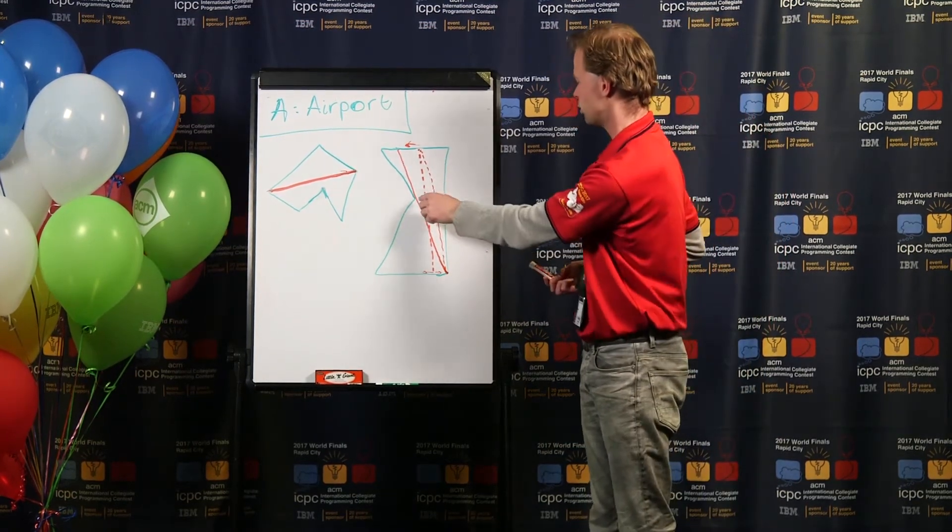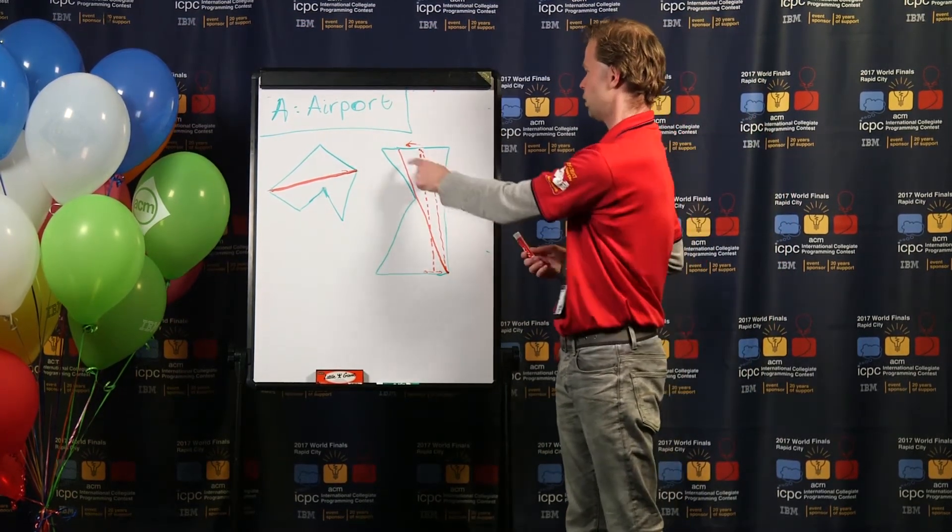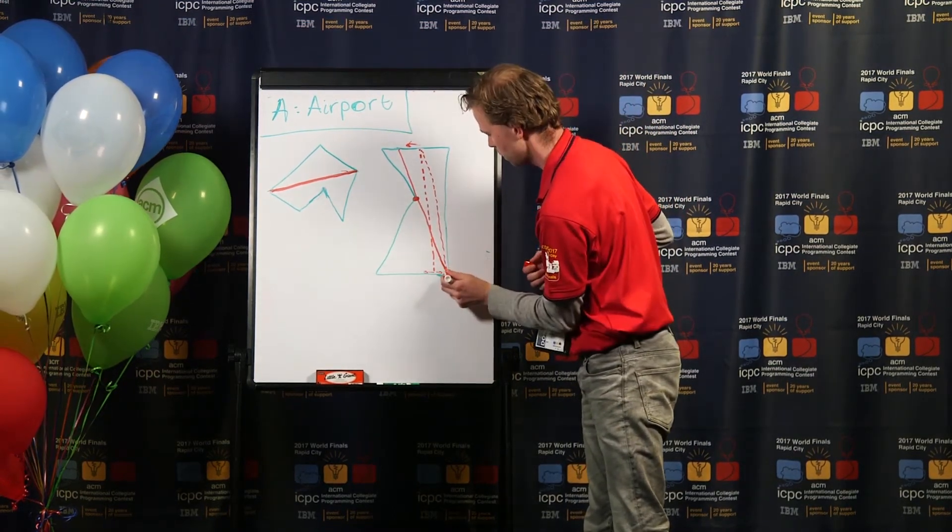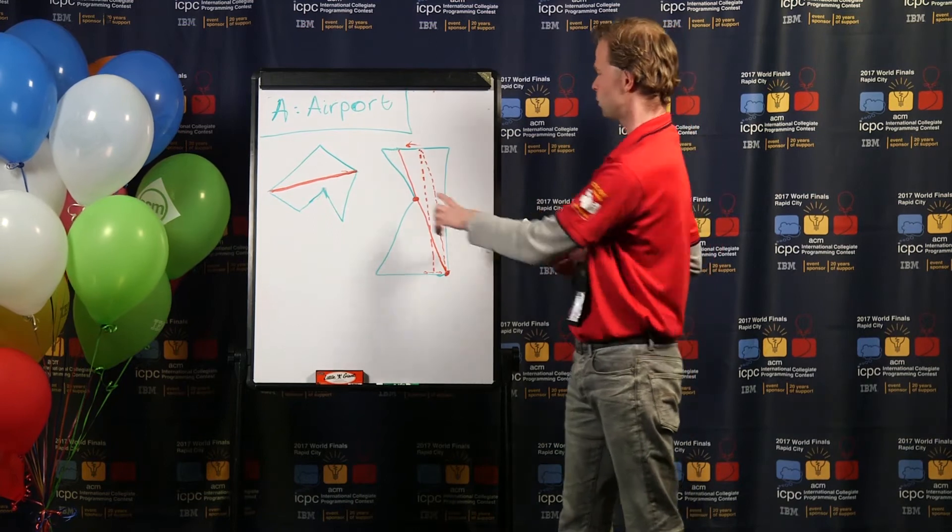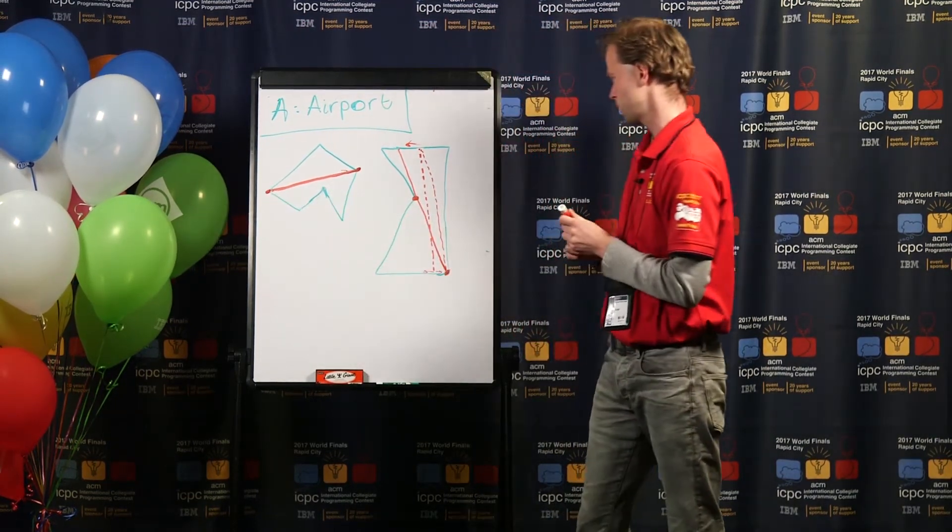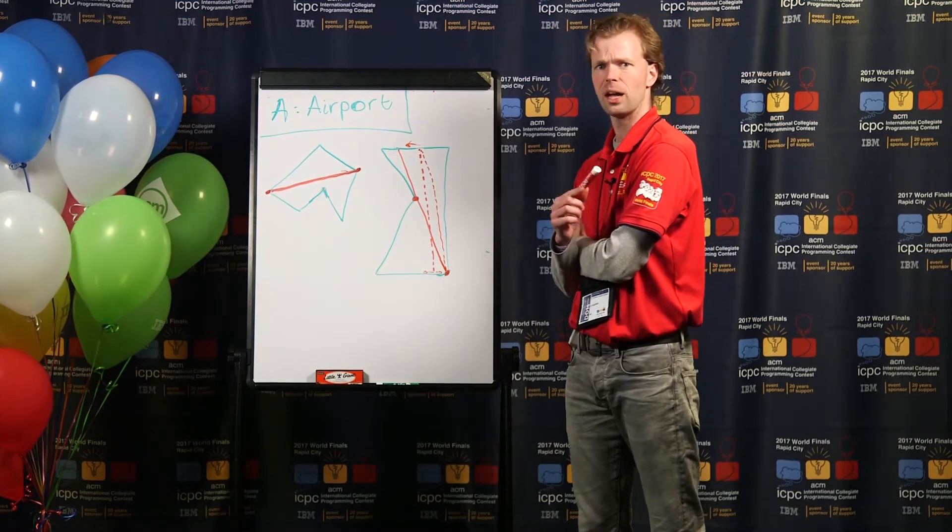The solution should always touch the bounding polygon in two points, in this case here and here. But these points are not necessarily the endpoints, such as in the sample case.